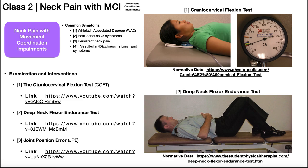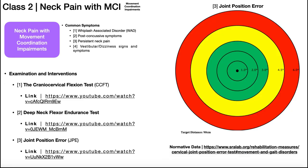The first two tests heavily rely on the deep neck flexors. The third test — the joint position error test — also uses them, just in a different way. You see this target with a bullseye at dead center, then concentric rings at 1, 2, 3, 4.5, and 6 degrees. The patient wears a small attachment on their head with a laser on top, faces the target at 90 centimeters distance, and the laser should initially point directly on the bullseye. You start the test with the laser on the black dot.